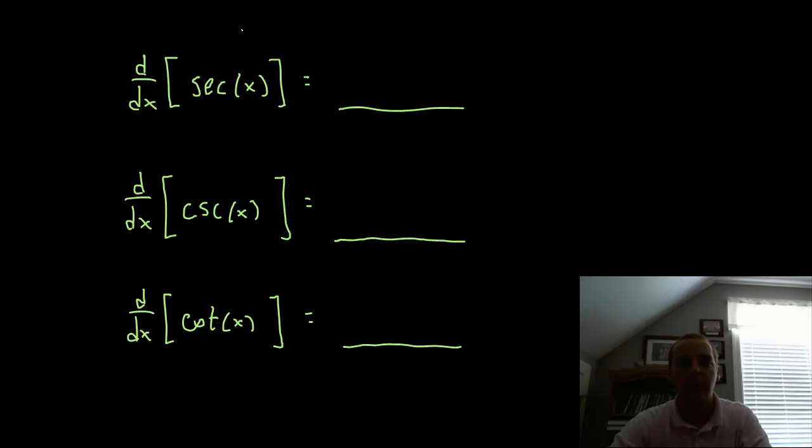So let me run through these real quickly here, the derivative for secant, if you did all the algebra which I'm going to forgo, you would get secant x tangent x. The derivative for cosecant is negative cosecant x times cotangent of x, and the derivative for cotangent is negative cosecant squared x.